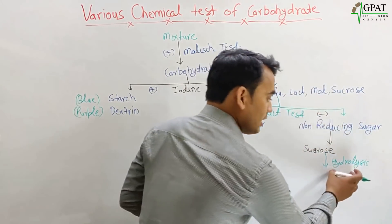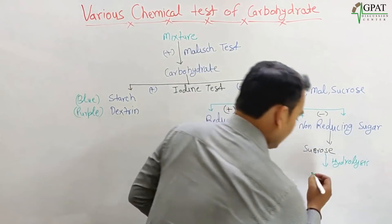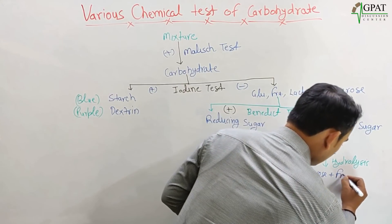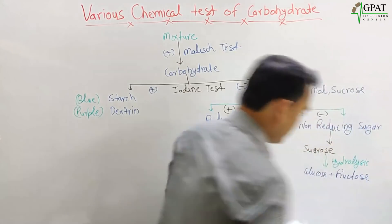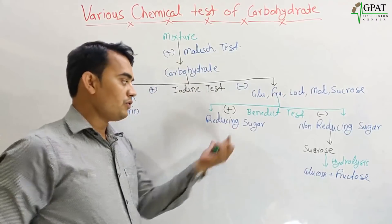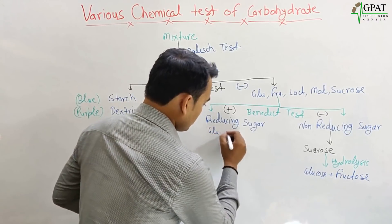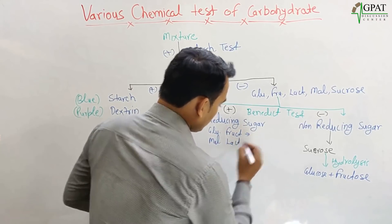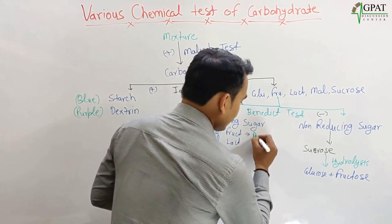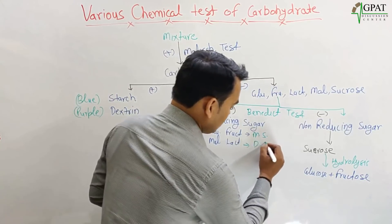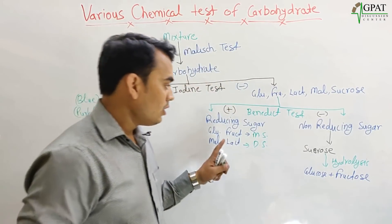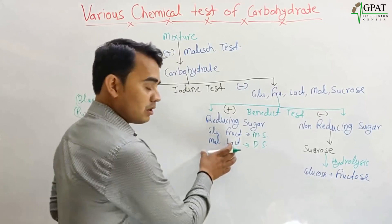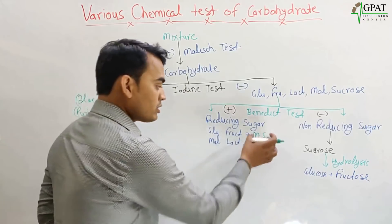For confirmation of sucrose, we apply hydrolysis. On hydrolysis, sucrose breaks down and forms glucose plus fructose, confirming it is a non-reducing sugar. Examples of reducing sugars are glucose, fructose — which are monosaccharides — and maltose and lactose, which are disaccharides. We will apply different tests to differentiate monosaccharides from disaccharides.